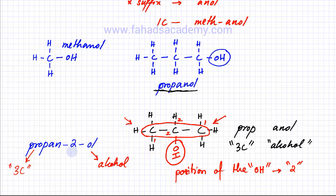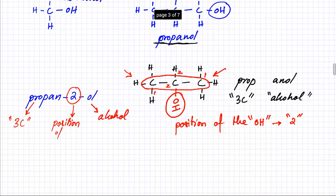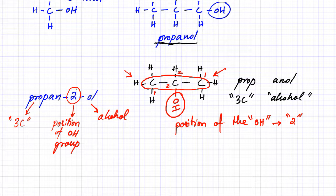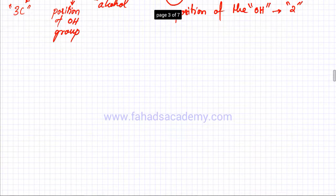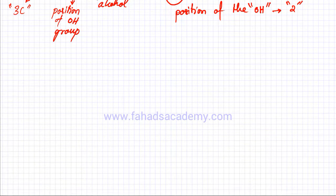That '2' tells us the position of the OH group. This is how an alcohol is named — you have the same issue as with alkenes. When naming alkenes you have to give the position of the carbon–carbon double bond, and when naming alcohols you have to give the position of the OH group, which is the functional group. Let's do a few more examples with a slightly more complicated molecule.